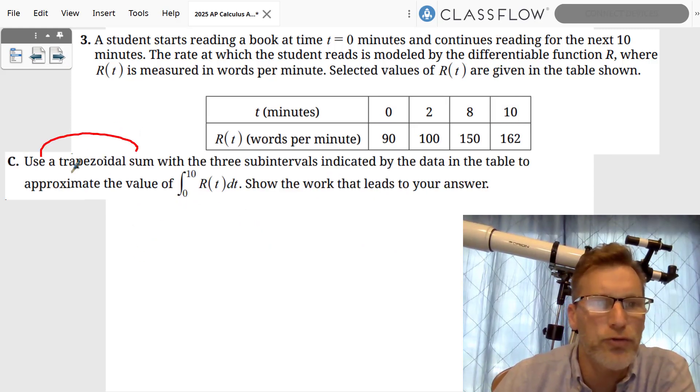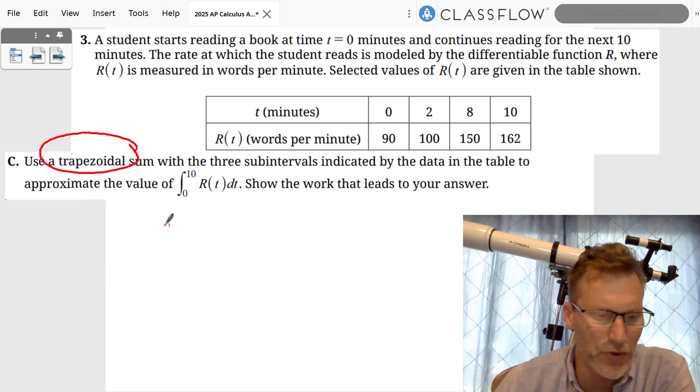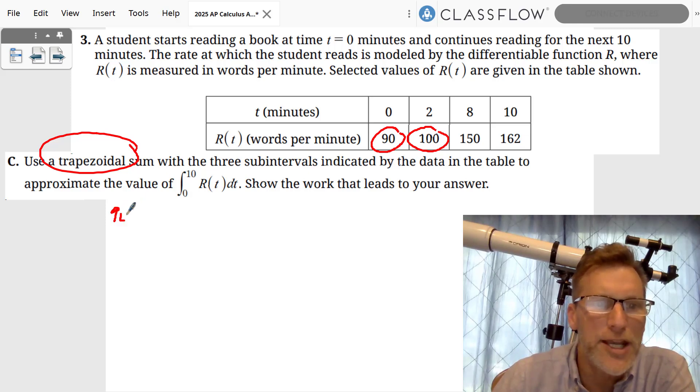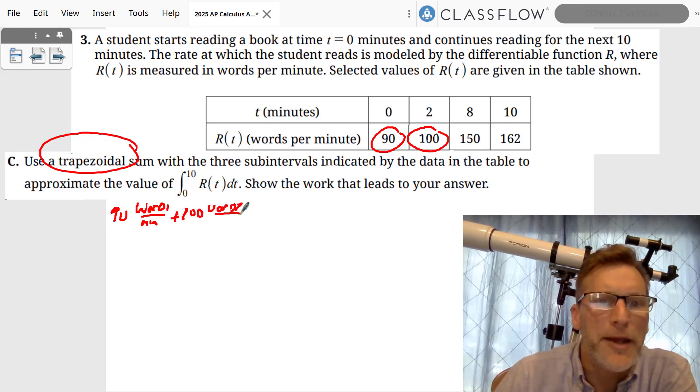Let's go to Part C. Part C is asking for a trapezoidal sum. So what do we want to do with the trapezoidal sum? We take our first two values: 90 words per minute, we're going to add 100 words per minute.